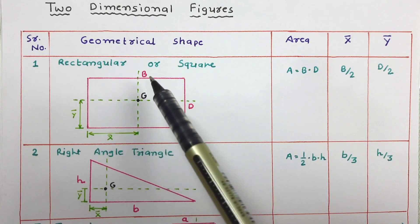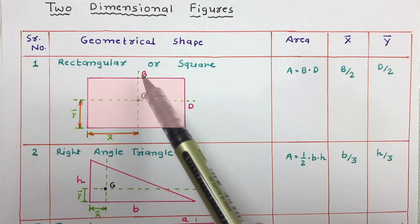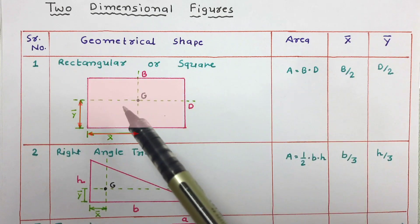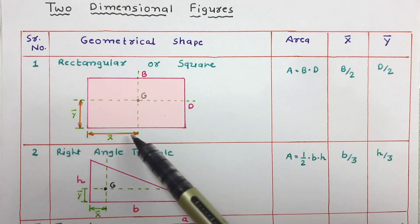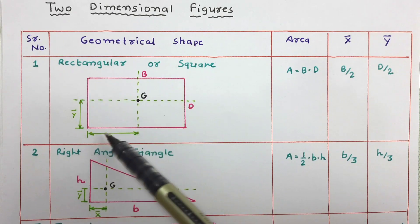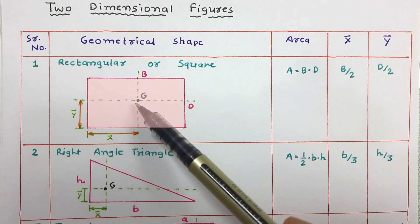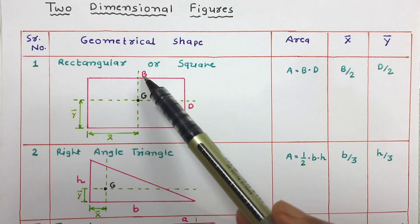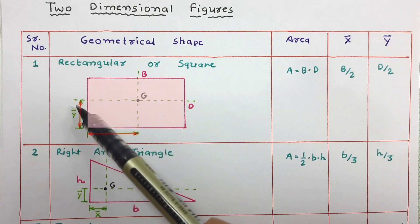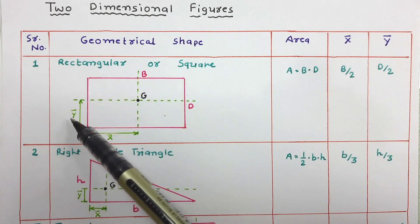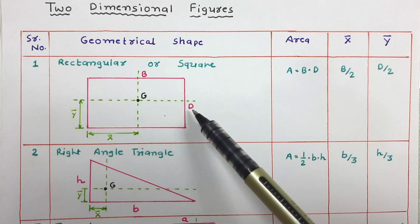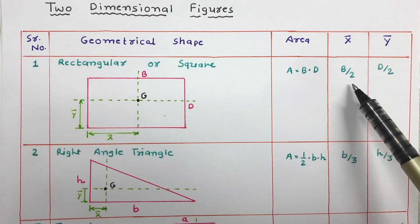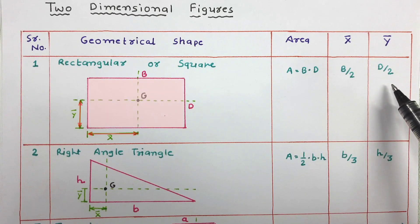For a square, b and d will be equal, so the area will be b into b, that is b squared. The centroid is at the center of the shape. So x-bar, the centroidal distance along the x-axis, will be b by 2, and y-bar, the centroidal distance along the y-axis, will be d by 2.